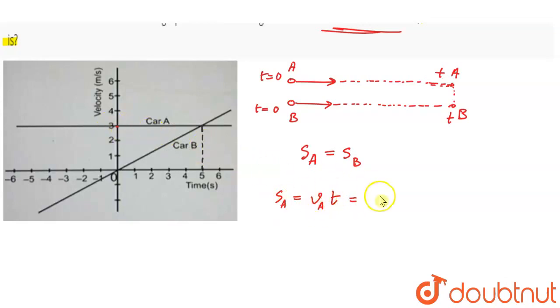v_A is 3 meters per second, so s_A equals 3t. v_A equals 3 meters per second.